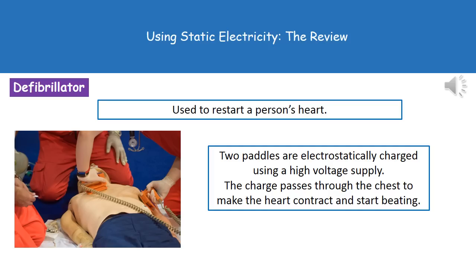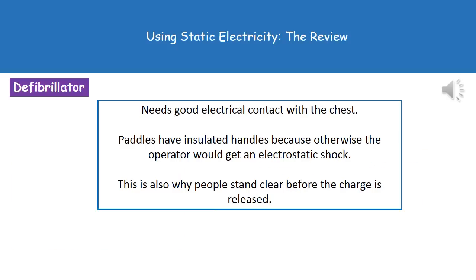The final use we need to look at is the defibrillator — the machine used to restart someone's heart when it has stopped. It has two paddles, which are charged up using electrostatics from a high voltage supply. By passing that static charge through the body, we cause the heart to contract and hopefully start beating again.